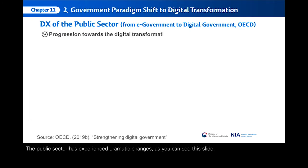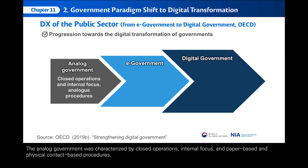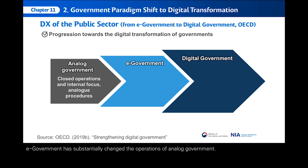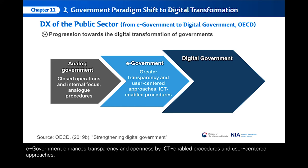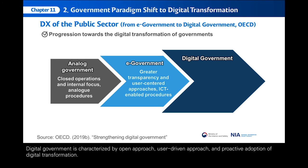The public sector has experienced dramatic changes, as you can see in this slide. Before e-government, we had an analog government, characterized by closed operations, internal focus, and paper-based and physical contact-based procedures. E-government substantially changed the operations of analog government by enhancing transparency and openness through ICT-enabled procedures and user-centered approaches. The current ongoing change is labeled as digital government — the outcome of digital transformation in the public sector — characterized by an open approach, user-driven approach, and proactive adoption of digital transformation.